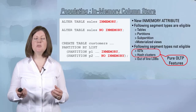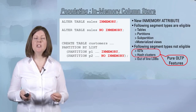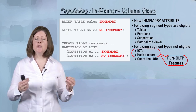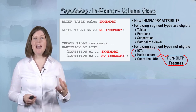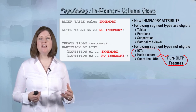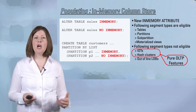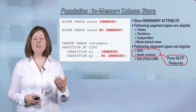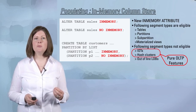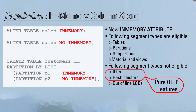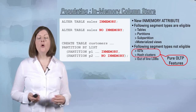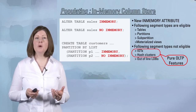Because you have the ability to specify the in-memory attribute at a segment level — so either a partition or a sub-partition — you can have an object that only has your performance-sensitive data in the column store while the rest of the object resides on disk. You can do this by specifying a different in-memory attribute on each of the partitions. When a query comes in to access that object, we'll pick up the data from wherever it resides, whether that's the column store, disk, or a combination of both.